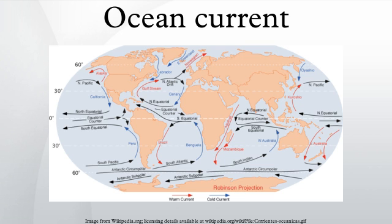Surface currents make up about 8% of all the water in the ocean and are generally restricted to the upper 400 meters. The movement of deep water in the ocean basins is by density-driven forces and gravity. The density difference is a function of different temperatures and salinity. Deep waters sink into the deep ocean basins at high latitudes where the temperatures are cold enough to cause the density to increase.